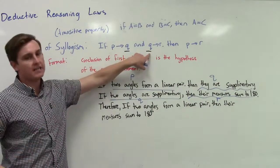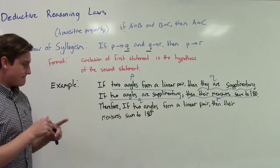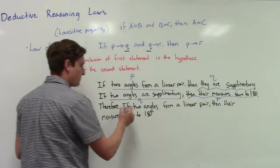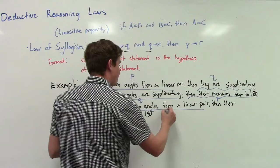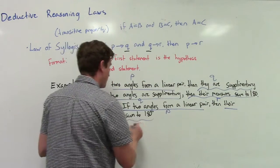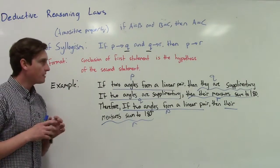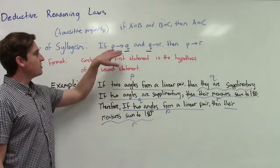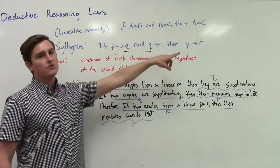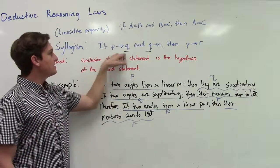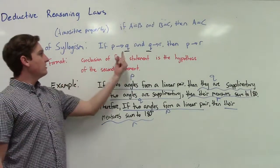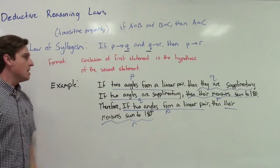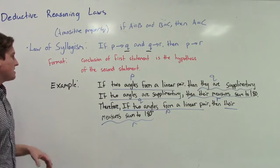For this to actually be the law of syllogism, the end of the first statement has to start the next one — you can't mess with the order. So: if two angles form a linear pair then they are supplementary; if two angles are supplementary then their measures sum to 180; therefore, if two angles form a linear pair, their measures sum to 180. That's p to r — transitive property but with conditional statements. In exercises they'll try to trip you up by putting things out of order, so remember: the conclusion of the first statement must be the hypothesis of the second. Law of syllogism — think transitive property.